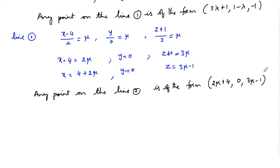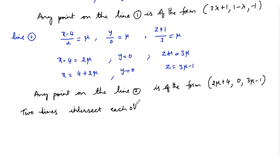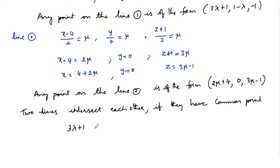For the lines to intersect, they must have a common point. The two lines intersect each other if they share a common point. So let us equate the general points on the two lines: (3λ+1, 1-λ, -1) = (2μ+4, 0, 3μ-1).